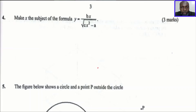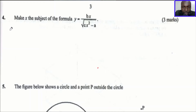Make x the subject of the formula: y equals bx divided by the square root of cx squared minus a. To make x the subject, we shall begin by getting rid of the square root sign in the denominator. To remove that square root sign, we get the square of both sides — we square both sides of the equation.